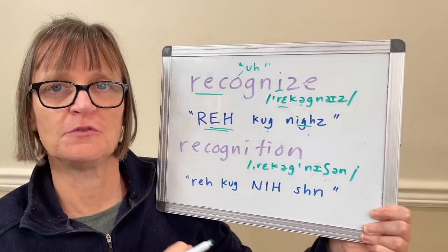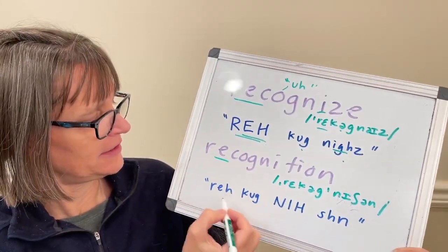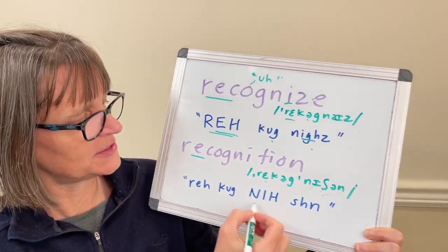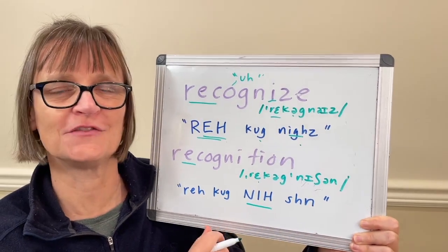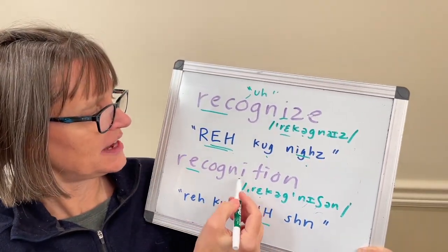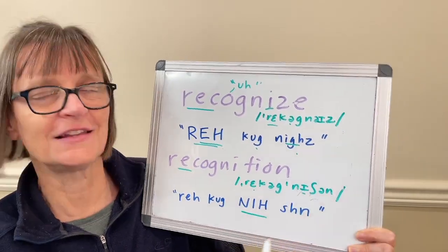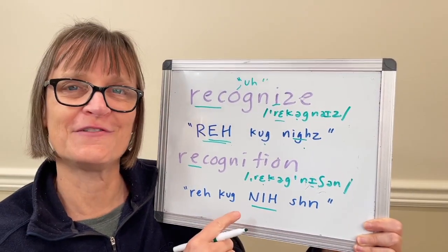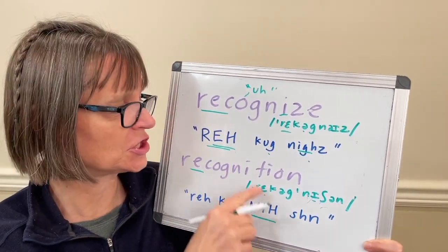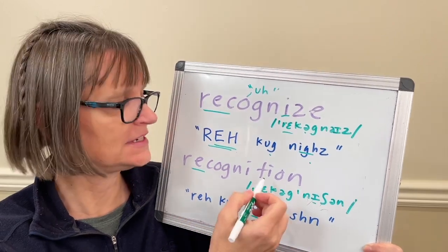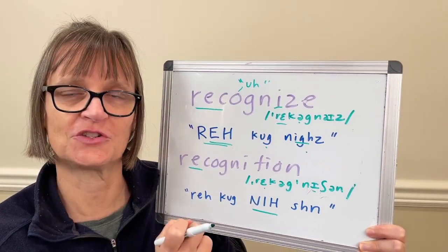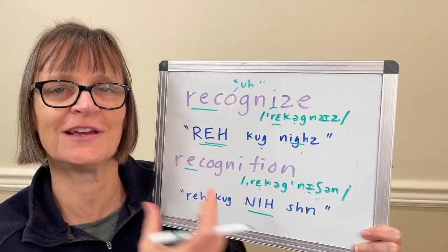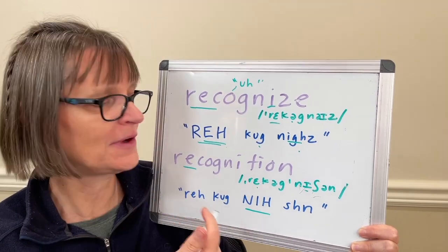When we move to 'recognition,' we do keep the clear vowel in the 'rec' syllable, but it only has secondary stress because the main stress now falls on the 'ni' syllable. So instead of an 'I' sound for this letter 'i,' we have the 'ih' sound like in 'it' or 'nit.' This follows the pattern of American English where words ending in '-tion' (t-i-o-n) stress the syllable before the ending — so in words like 'recognition,' 'communication,' 'magician,' we're always stressing that vowel right before the final syllable.